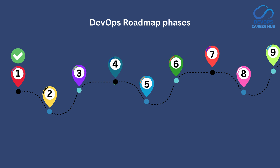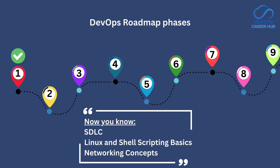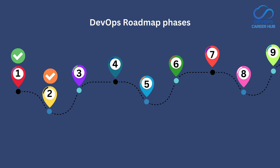With that, you will complete phase 1. Upon completing phase 1, you will understand the software development lifecycle, have gained proficiency in Linux concepts and basic commands, achieved an intermediate level in shell scripting or bash, and acquired good foundational knowledge in networking concepts. This phase typically takes about one month to master. Once finished, you will be prepared to move on to phase 2.